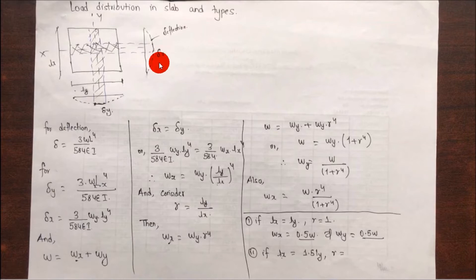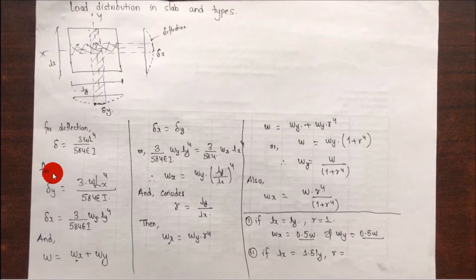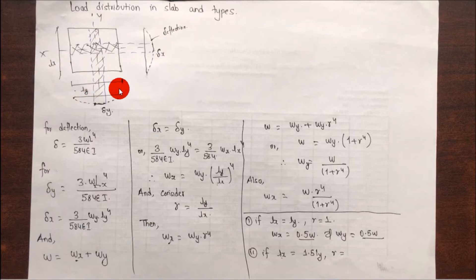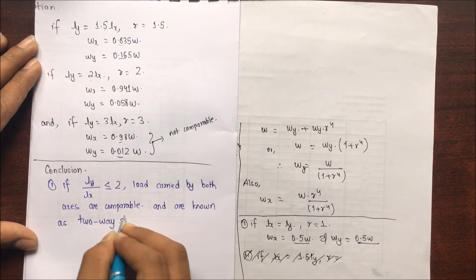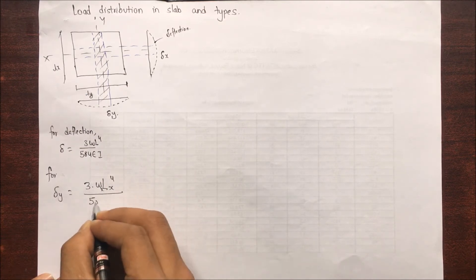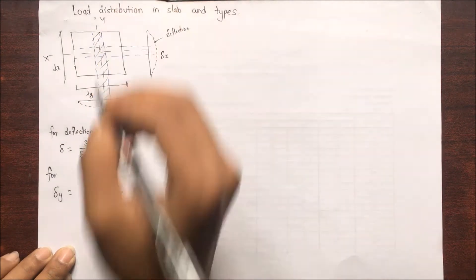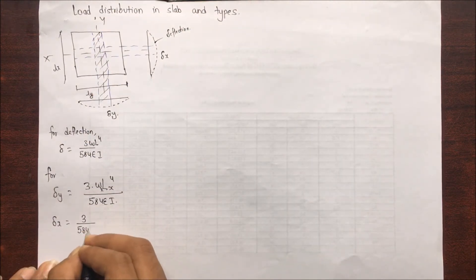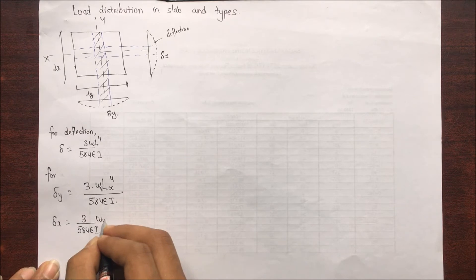For deflection, we have the formula: delta = (3/584) × (w × L⁴) / EI, where w is the load and L is the length. So delta y is represented with L x, and for delta x it will be L y, because the length runs in the x-axis for delta y.